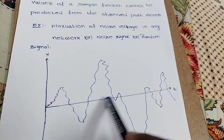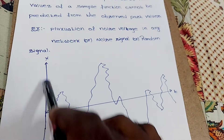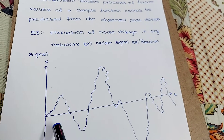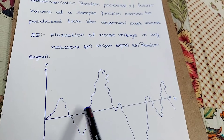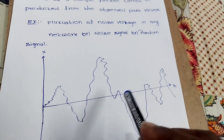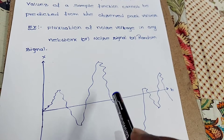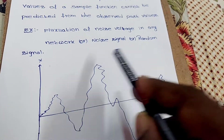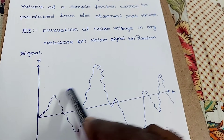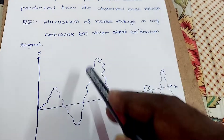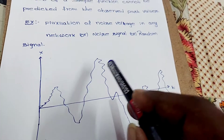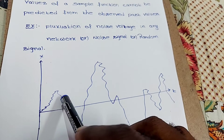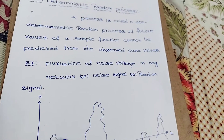Here, the x-axis is taken as time and the y-axis is taken as the random variable x. Future values cannot be predicted by knowing past values, because the signal is of a random nature — that is why we cannot predict future values by observing past values.